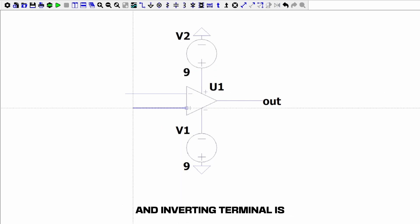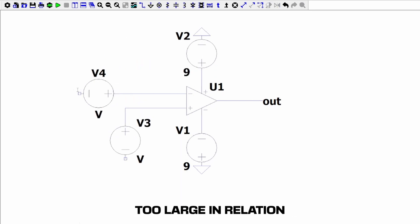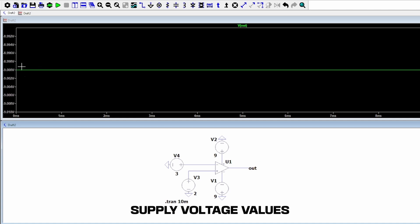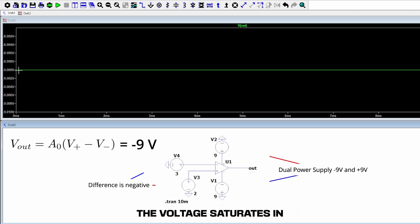If the difference between the non-inverting and inverting terminal is too large in relation to the op-amp's open-loop gain, the op-amp will drive its output to one of the supply rails. This is known as clipping or saturation when it rails to one of the supply voltage values. The voltage saturates in this circuit because of the high gain.